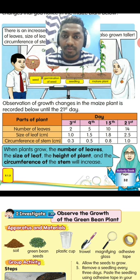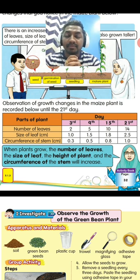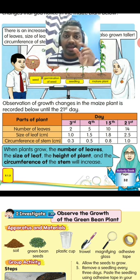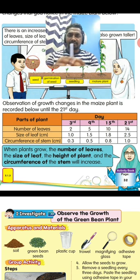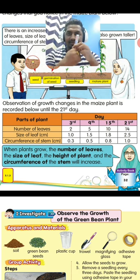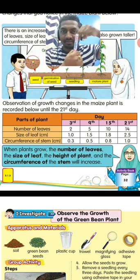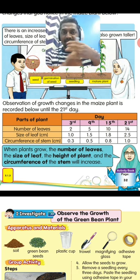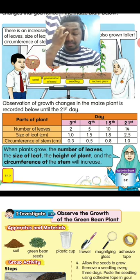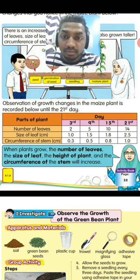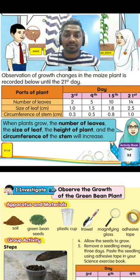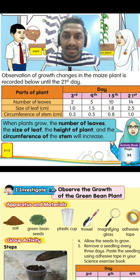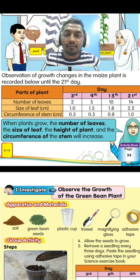So what we can say is: when the plant is growing, the number of leaves will be increasing, the size of the leaf will also be increasing, and the circumference of the stem will become bigger. Look at the conclusion here: when a plant grows, the number of leaves, the size of leaf, the height of plant, and the circumference of the stem will all increase.